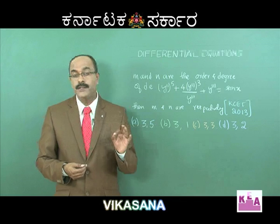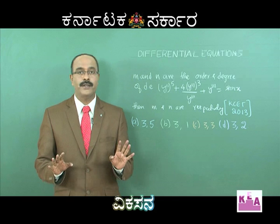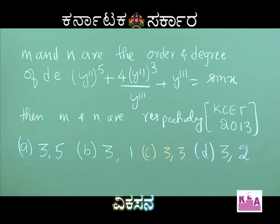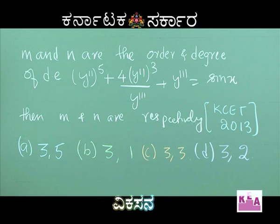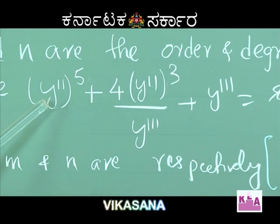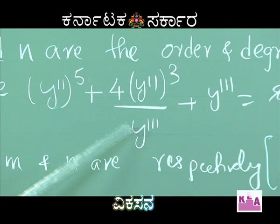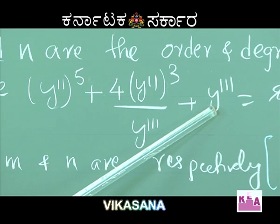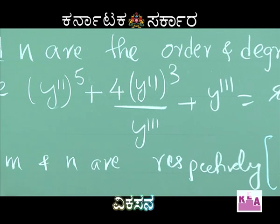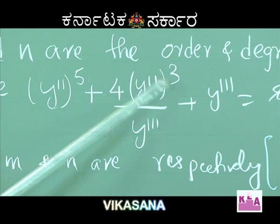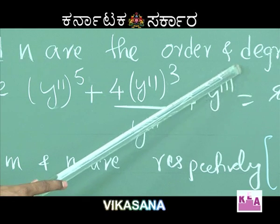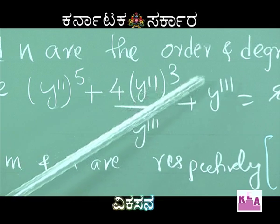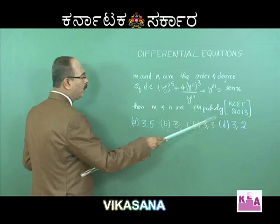KCET question: M and N are the order and degree of the differential equation y'' power 5 plus 4(y'' cubed / y''') plus y''' = sin x. Here y''' is the third order derivative, so order is 3. Multiplying through, the highest power is 2, so degree is 2. Option D is correct.